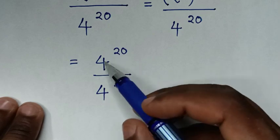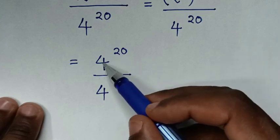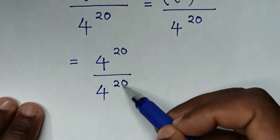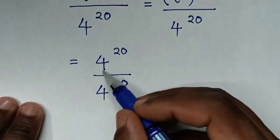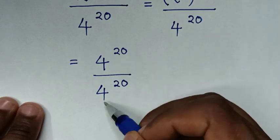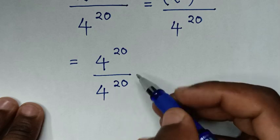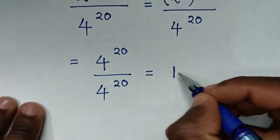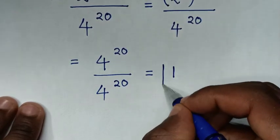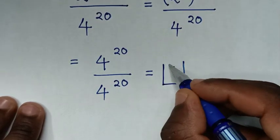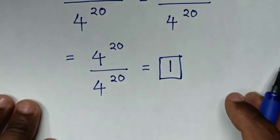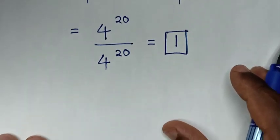In here, division of exponents with same base and same power: 4 power of 20 divided by 4 power of 20 is equal to 1. Therefore, this is our final answer.